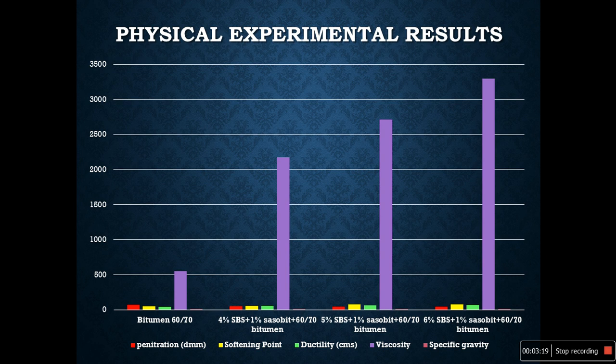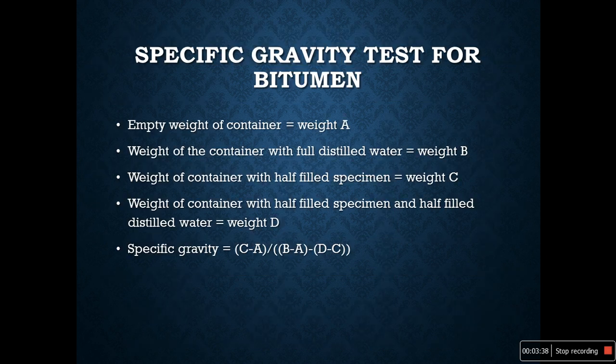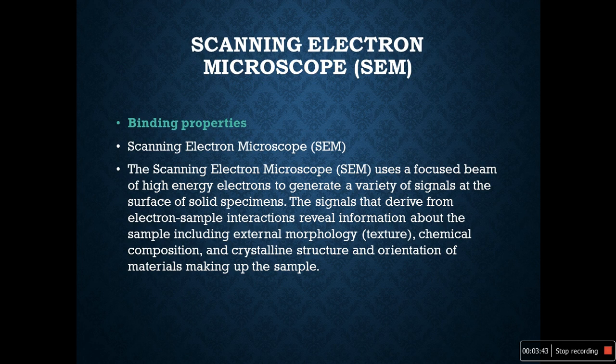The results show that bitumen has minimal viscosity values, which increases with the mixing ratios, where viscosity is highest for 6% SBS plus 1% Sasobit plus 60/70 bitumen. The specific gravity test for the bitumen has also been calculated.